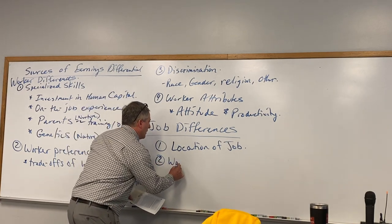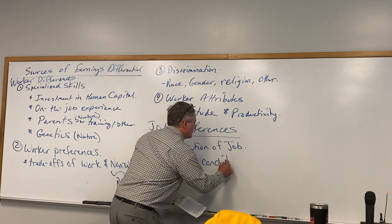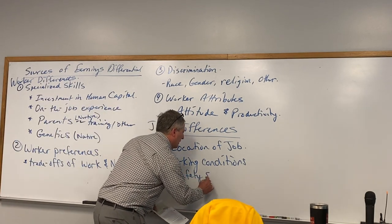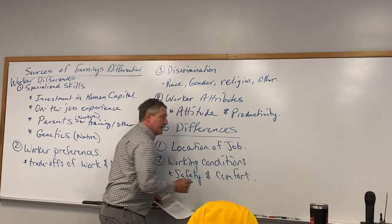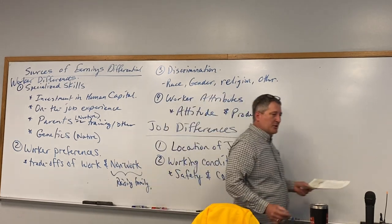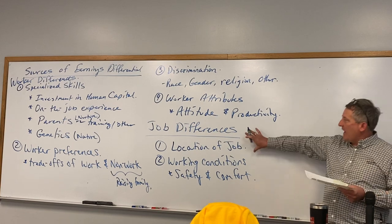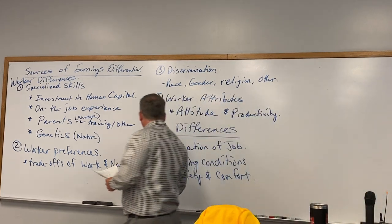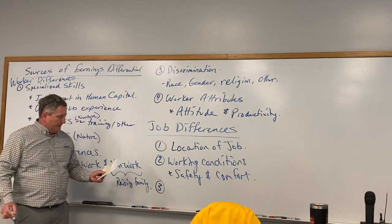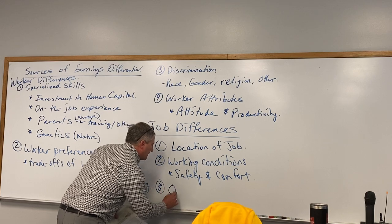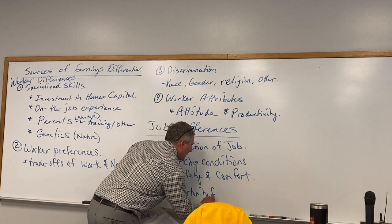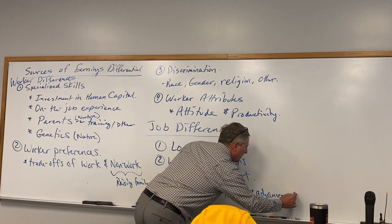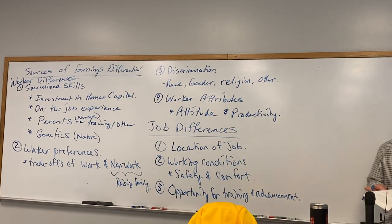Number two: working conditions — job safety and comfort. I brought up the air conditioning example: Walmart distribution center versus American Eagle, similar location, but one has air conditioning and one doesn't. Number three: fringe benefits — there might be opportunities for training, such as paying for your education, opportunity for training and advancement, so you can further develop more skills.